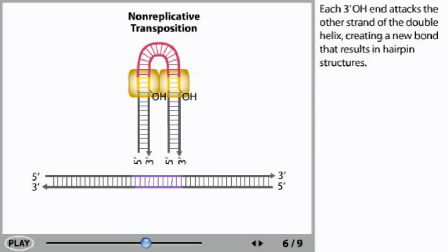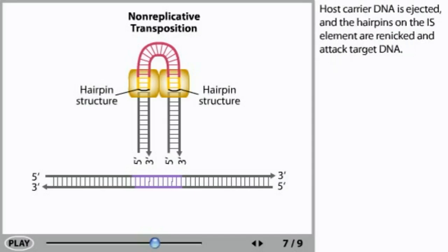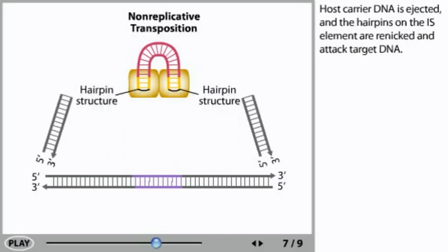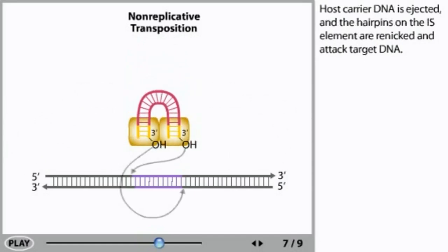Each 3' OH end attacks the other strand of the double helix, creating a new bond that results in hairpin structures. Host carrier DNA is ejected and the hairpins on the IS element are re-nicked and attack target DNA.